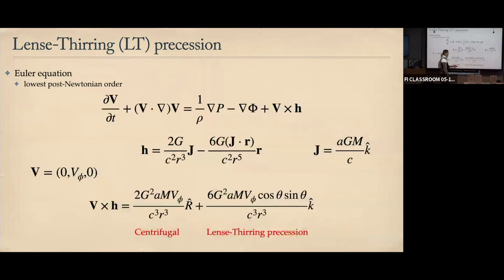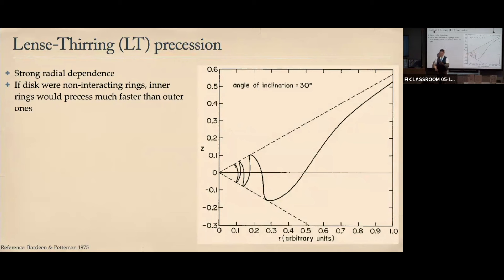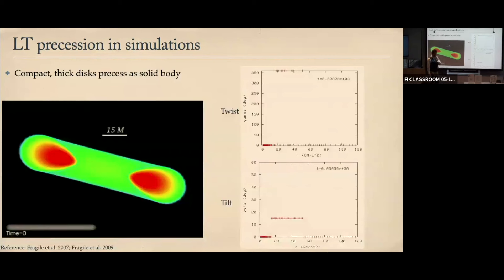Lense-Thirring precession is strongly radially dependent — strongest very close to the compact object and weakening further out — so it tends to want to twist up the disk. If you imagine the disk as non-interacting rings, the inner part would twist rapidly and the outer parts more slowly. But disks aren't non-interacting rings; they interact with each other. In GRMHD simulations of relatively compact, thick disks onto a rotating black hole, what we actually find is the disk doesn't stay twisted — instead, the entire disk precesses globally.